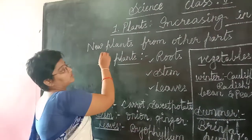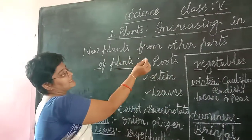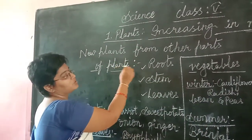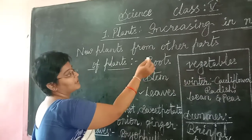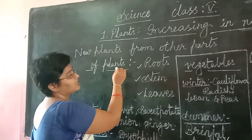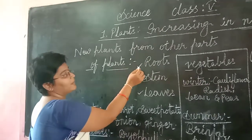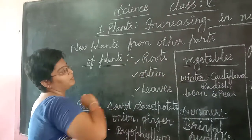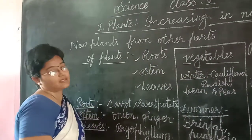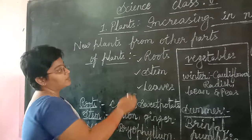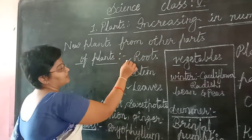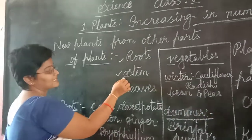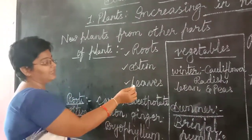The parts which are involved in making new plants — those parts are nothing but roots, stem, and leaves.